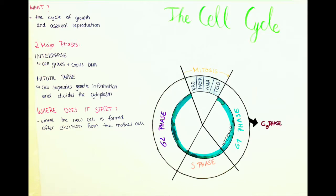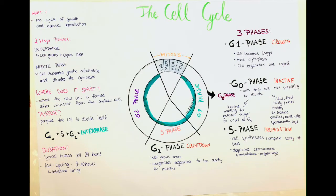The purpose of the cell cycle is to prepare the cell to divide itself again. Just to mention it here because it's right here on the poster: the G1 phase, S phase, and G2 phase together build the interphase. Let's go through the different phases of the interphase, since I describe the mitosis as a whole in another video.